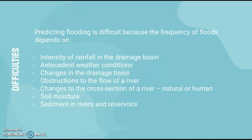Changes in the drainage basin themselves — including human interference, urbanization, channel modifications, and obstructions to river flow — can affect flood prediction. Soil moisture impacts the amount of water stored in the ground; more permeable surfaces can result in a lower peak discharge and a larger lag time. Sediment in rivers and reservoirs can also impact the ability to predict a flood, as it can affect the magnitude of the flood event.